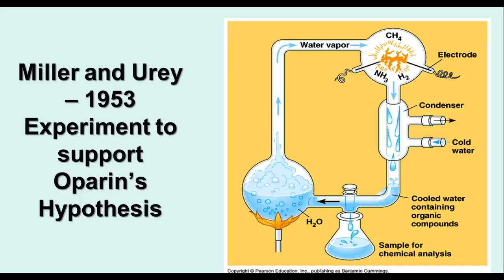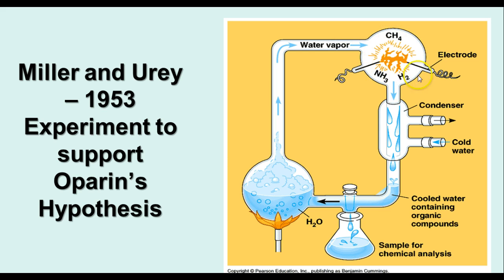Back in 1953, two scientists named Stanley Miller and Urey came up with an experiment to support Oparin's hypothesis. They had a closed system that had a place that boiled water and created water vapor. Into a closed chamber, they introduced ammonia gas and hydrogen gas along with the water vapor, and they used electrodes to simulate lightning, and they hooked it up and just let it run for a while. The gases were then passed through a condenser, which condensed the gases down to liquids, and the cooled water would then go back into the system and recirculate.